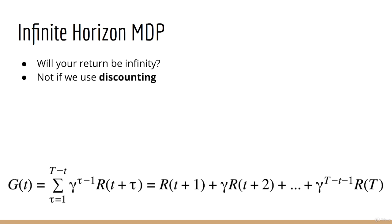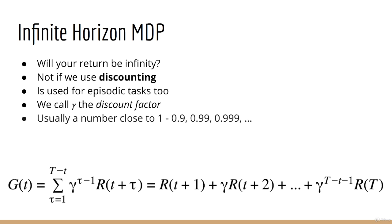Discounting is used for infinitely long tasks, but it's also used for episodic tasks as well. We introduce a discount factor called gamma. Each future reward is weighted by gamma to some power. Gamma is usually a number close to 1, like 0.9, 0.99, or 0.999. It's a hyperparameter, so you'll have to choose its value based on the performance of your agent.